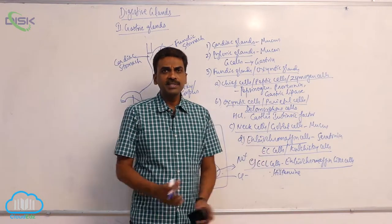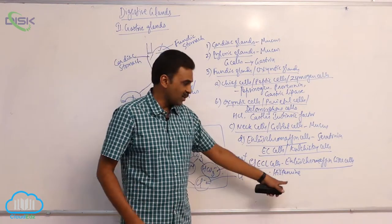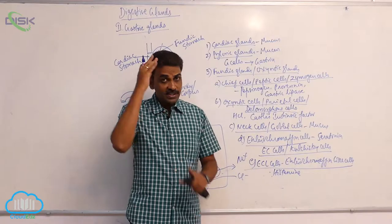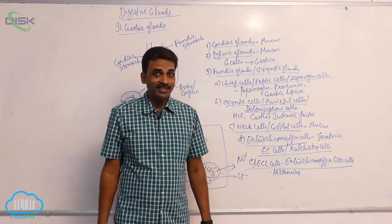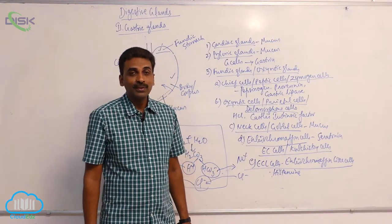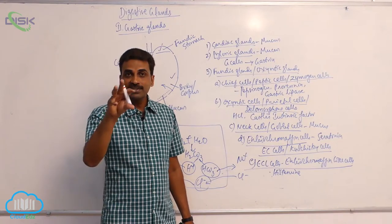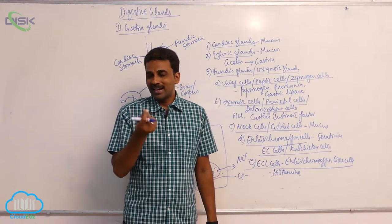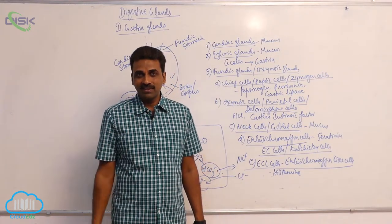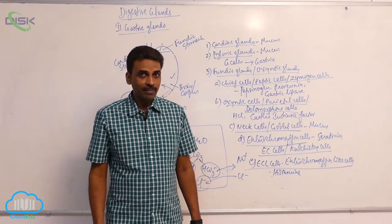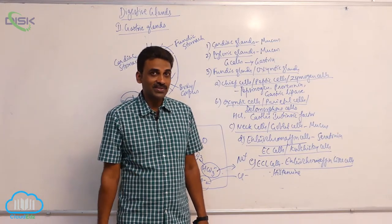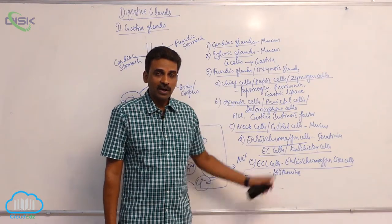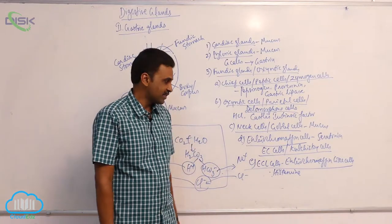Do not confuse this histamine with the histamine released from mast cells and basophils. Histamine is released at several places including the brain, where it acts as a neurotransmitter that prevents sleep and causes awakening. When you take antihistamine medicines for a runny nose, they attach to histamine receptors and cause sleepiness over time.